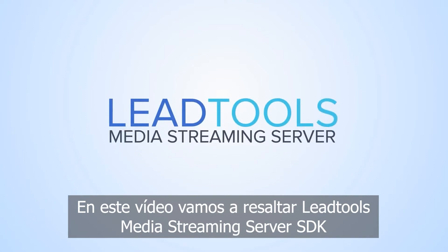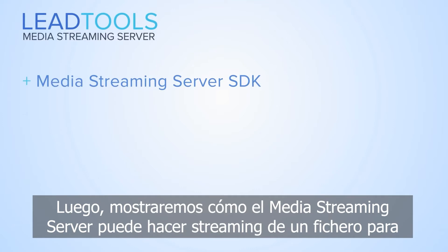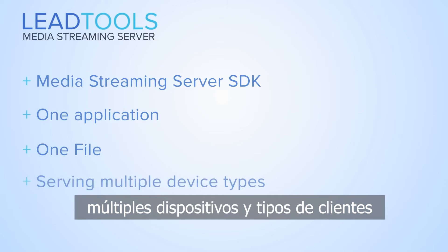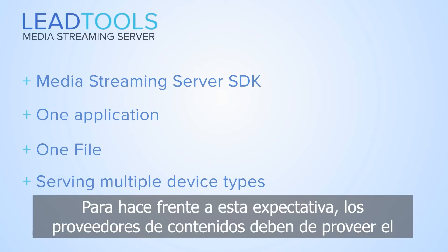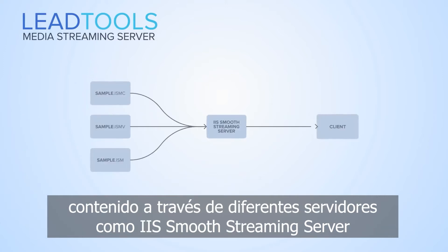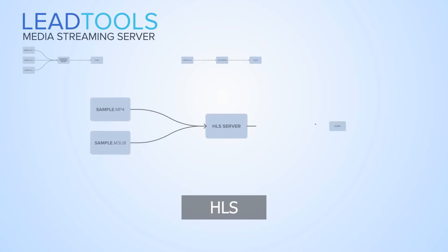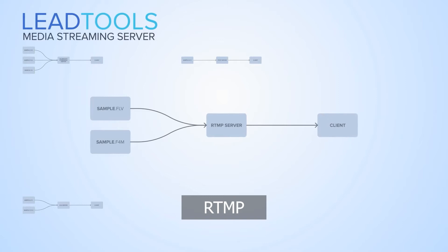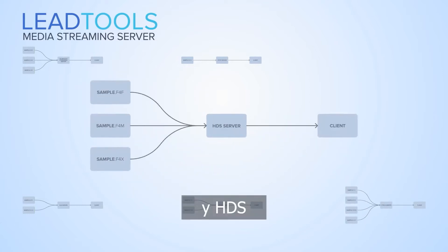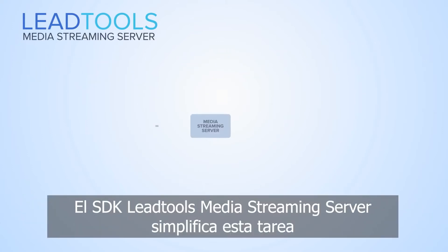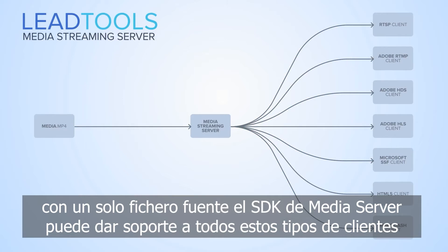In this video we will highlight the LEADTOOLS media streaming server SDK. We will first introduce the media streaming server, then show how it can stream one file to multiple devices and client types. Users expect content to work on all of their devices and browsers. To meet this expectation, content providers must provide content via different servers like IIS Smooth Streaming, RTSP, HLS, RTMP, HTML5, and HDS. The LEADTOOLS media streaming server SDK simplifies this task.